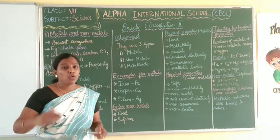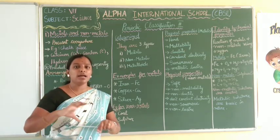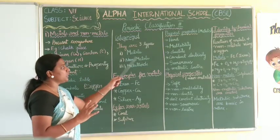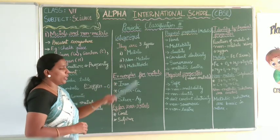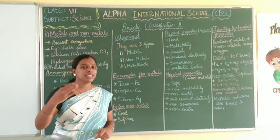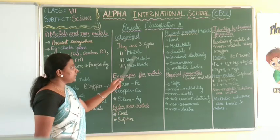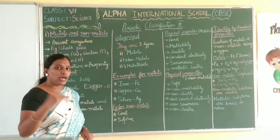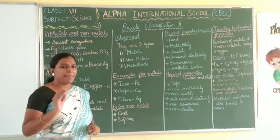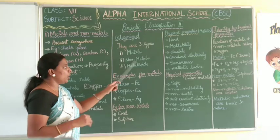Now we are going to see how the periodic table is characterized. There are three categories: metals, non-metals, and metalloids. They are three types of things characterized in a periodic table. You are going to learn only two — metals and non-metals. Metalloids will be learned only in higher classes. Now we are going to see metals and non-metals.